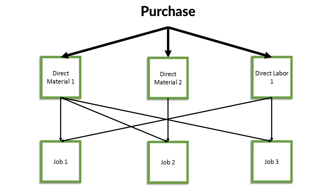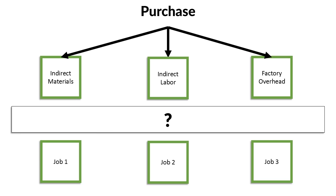But for indirect materials, indirect labor, and factory overhead, do we really know where they're going? We might say we used $500 of nails in the month of January, but do we know in which jobs did we use them? They're too small to track, so we actually don't know where they go. So how do we apply overhead to a job if we don't know where it goes?